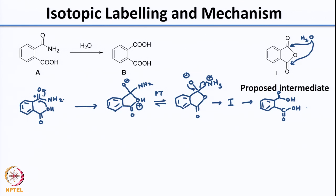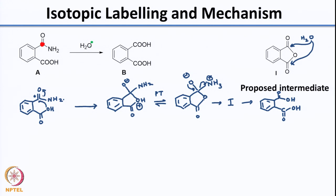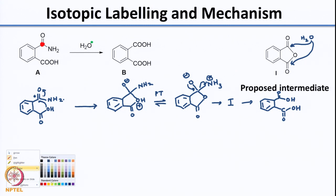To figure out whether this is what is happening, one can always argue that water is probably directly attacking the carbonyl of the amide. To distinguish between these two mechanisms, what was done was that the carbon of the amide was labeled and the oxygen of water was labeled. Now if you have these two labels, look carefully at the intermediates and see what the label has done. The labeling of the carbon makes the intermediate unsymmetrical.